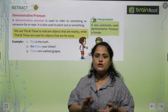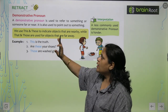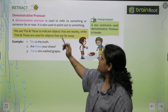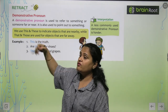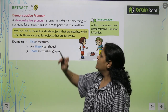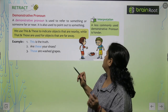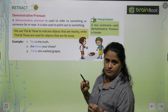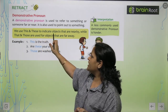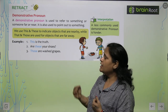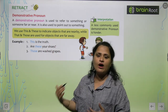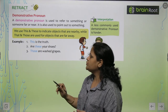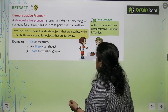Now, demonstrative — when we point out to something. It is used to refer to something or someone far or near. It is also used to point out to something. A less commonly used demonstrative pronoun is 'yonder.' We use 'this' and 'these' to indicate objects that are nearby, and we use 'that' and 'those' for objects that are far away. Example: 'This is the truth.' 'Are these your shoes?' 'Those are washed grapes.'